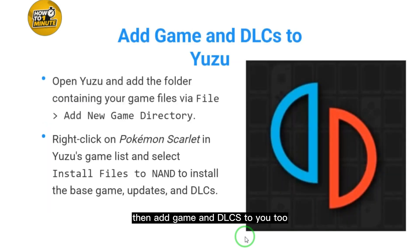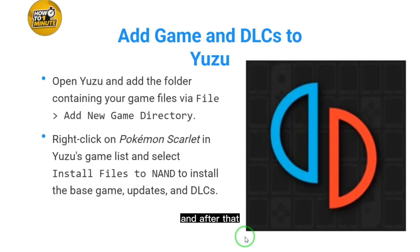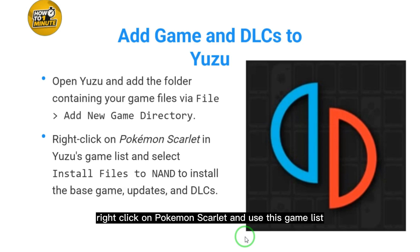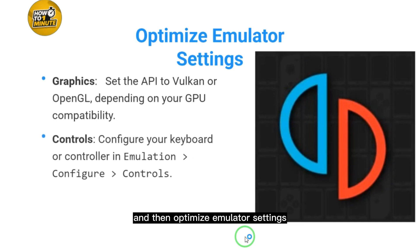Now add the game and DLCs to Yuzu. Open Yuzu and add the folder containing your game files via File > Add New Game Directory. Then right-click on Pokémon Scarlet in the game list and select Install Files to NAND to install the base game, updates, and DLCs.